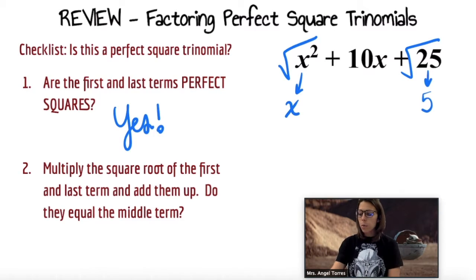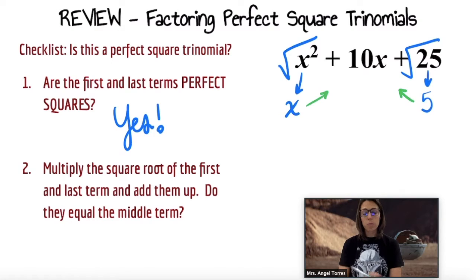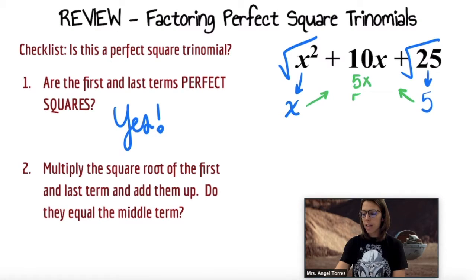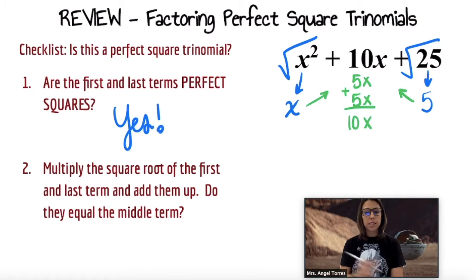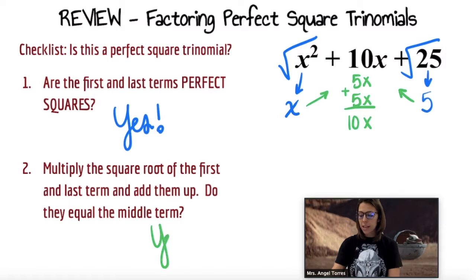We're going to multiply these together and see if they add up to the middle term. x times 5 is 5x, and 5x plus 5x does indeed add up to 10x. So yes, it also satisfies the second checklist item.